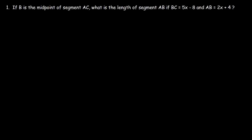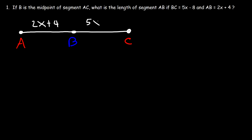Now let's work on some problems. If B is the midpoint of segment AC, what is the length of segment AB if BC is 5X minus 8 and AB is 2X plus 4? Let's start by drawing segment AC. We know that B is the midpoint, so B should be somewhere in the middle. AB is 2X plus 4 and BC is 5X minus 8. A midpoint divides a segment into two congruent parts, so AB is congruent to BC.